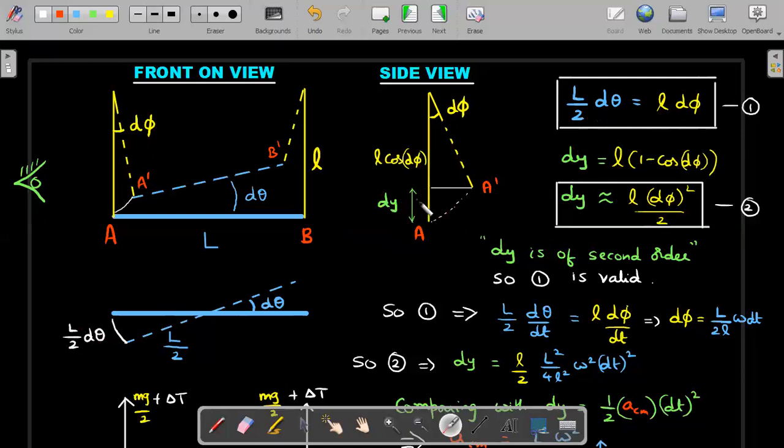Why? Because if I calculate this d y, d y is L into one minus cos d phi. I can write this as approximately two sine square d phi by two and for small angle, sine of angle is angle itself. I'll be able to write this. You realize one very important thing that the d y has second order approximation. That means it's proportional to angle square. Whereas this L by 2 d theta is proportional to angle, L d phi is an angle. So whatever approximation or correction that it should have here is the second order term. So since d y is of the second order, the first equation is valid.